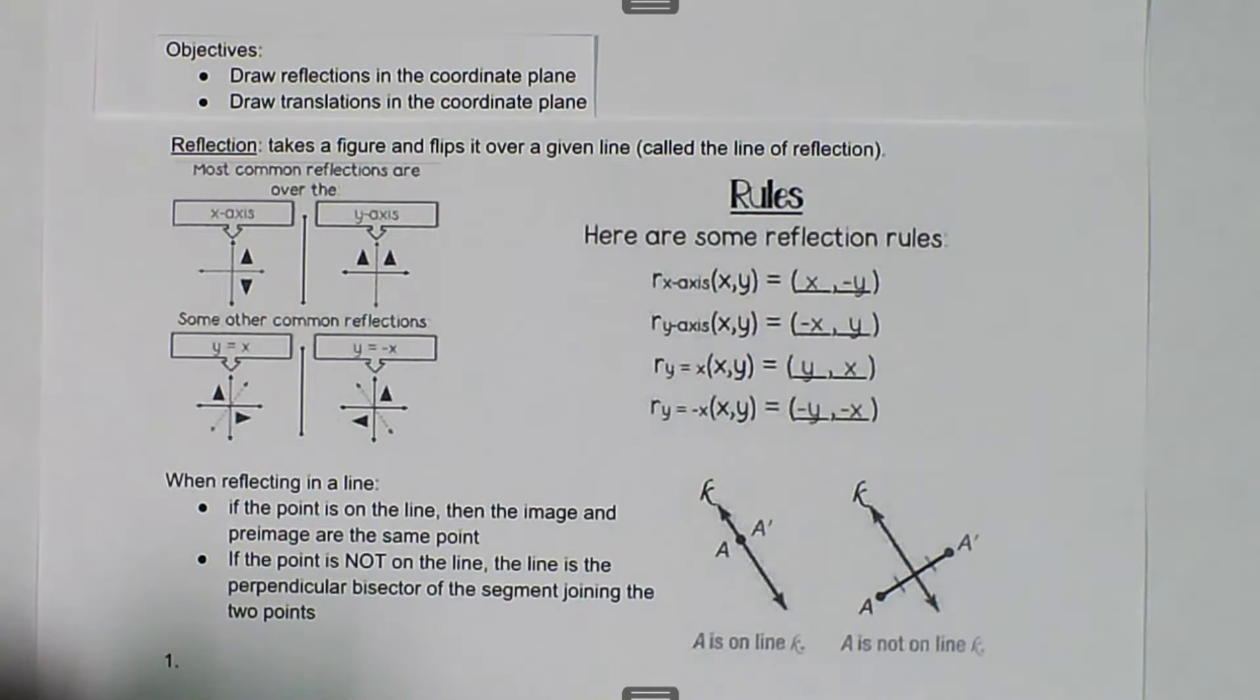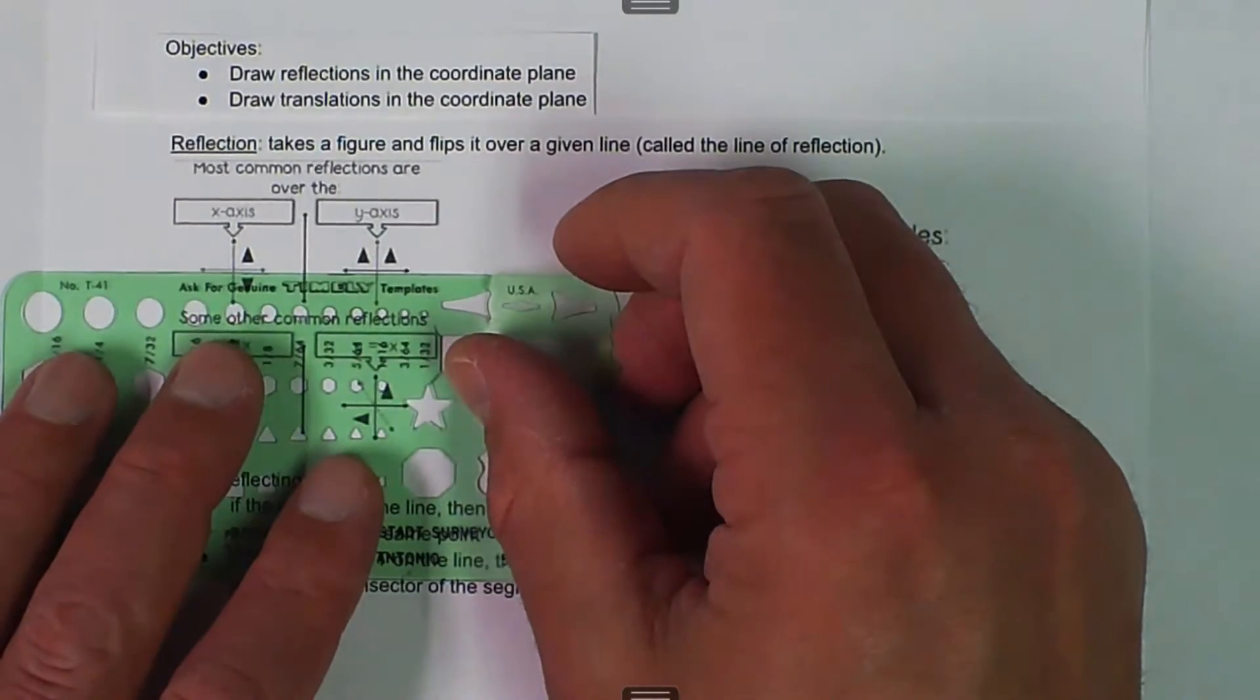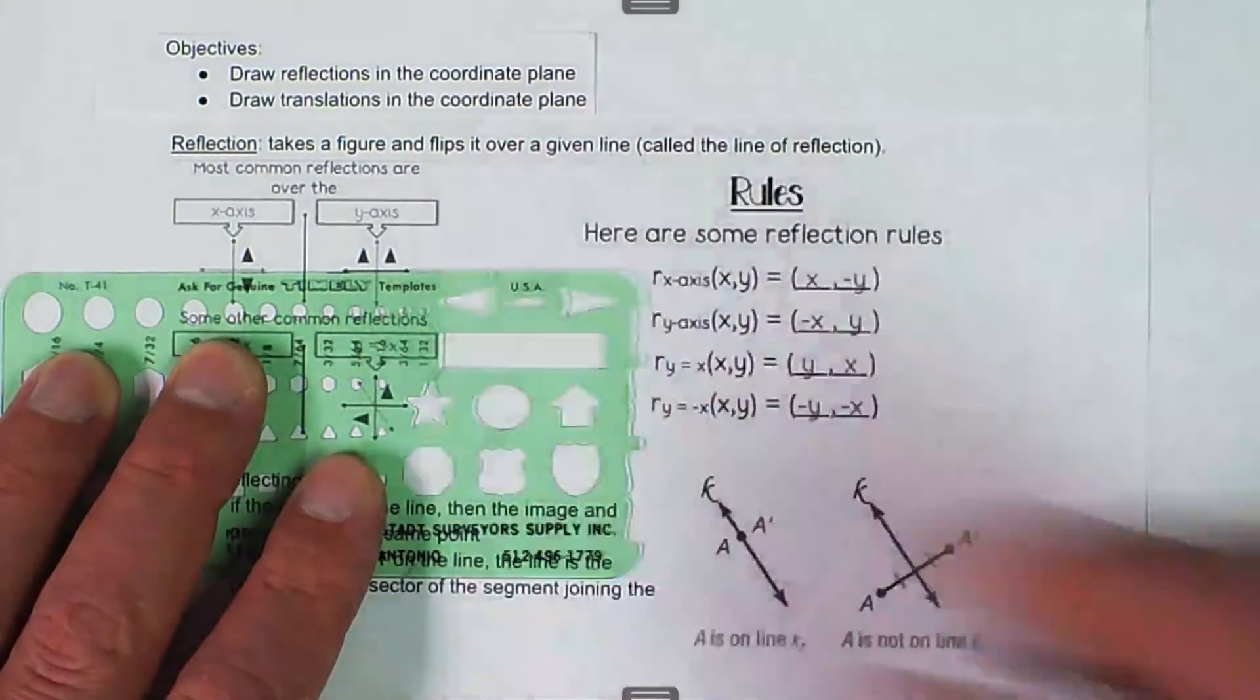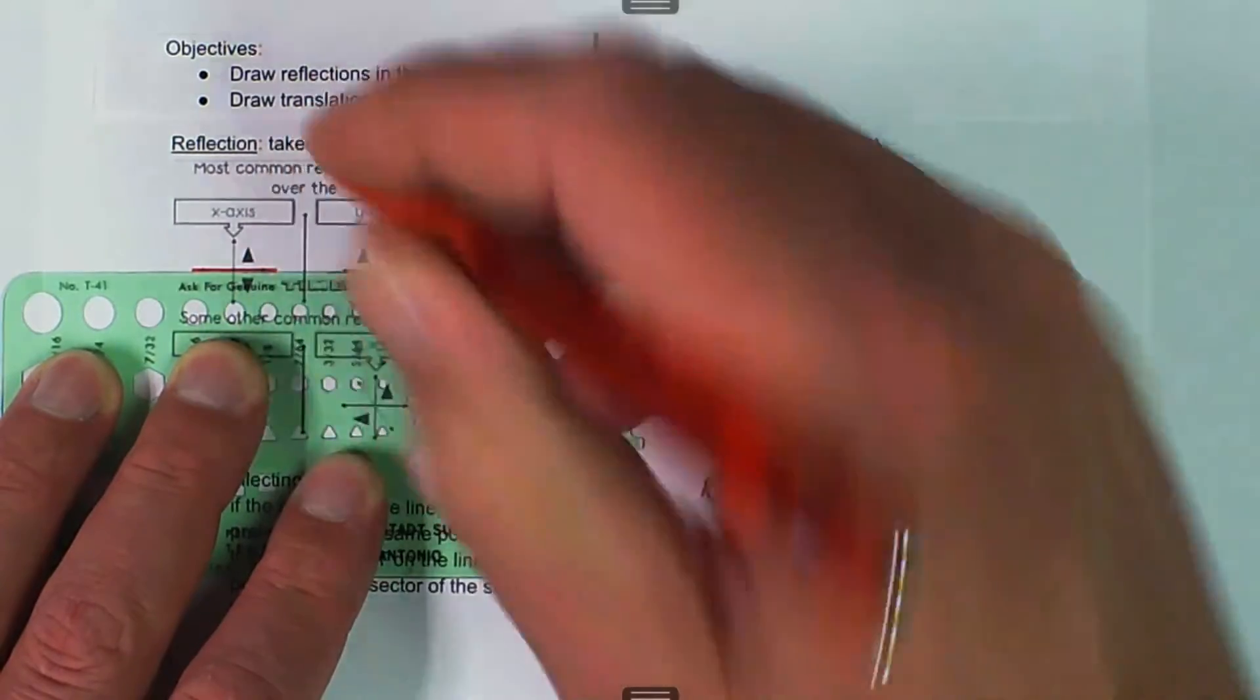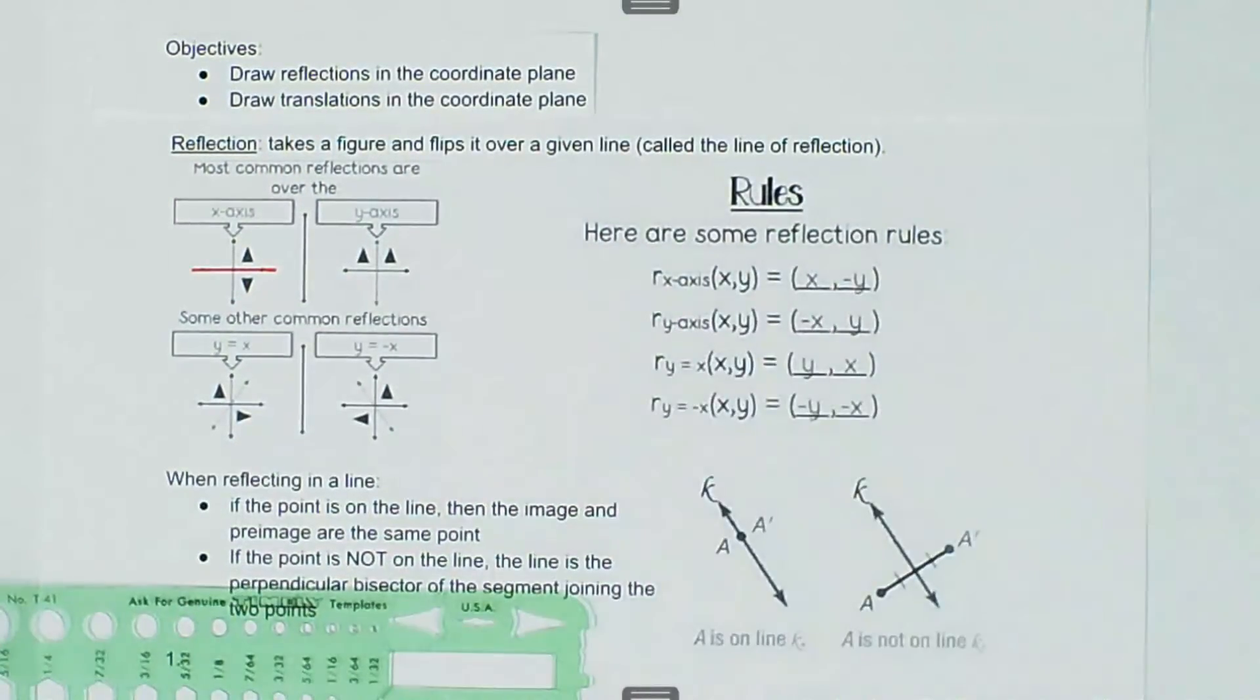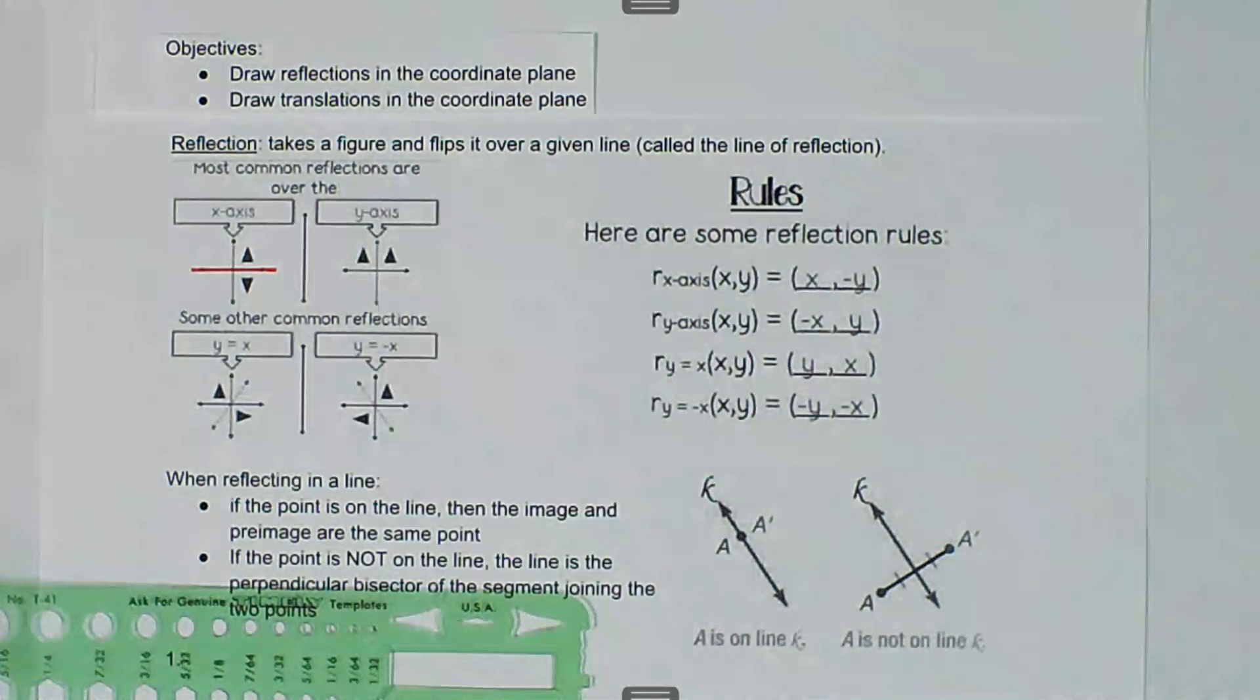The first line that we have is flipping over the x-axis. When we flip over the x-axis, we basically flip the figure vertically. So in this case, we're going to flip over the x-axis. This is the x-axis right here. We take the pre-image and we flip it over, and that gives us our image.